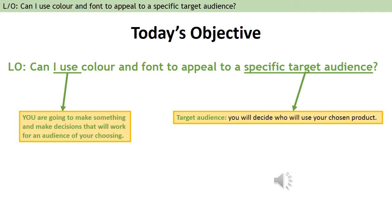Now hopefully this will be a nice fun piece of work, but there is a serious side to it as well. So our objective today is: can I use colour and font to appeal to a specific target audience? When we say can I use, we're thinking about what you are going to do — you are going to make something, make decisions that will work for an audience that you're going to choose.